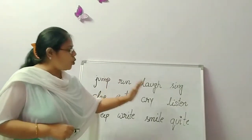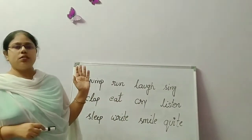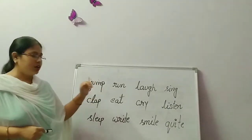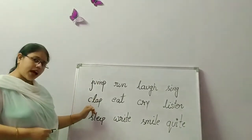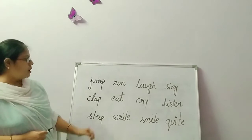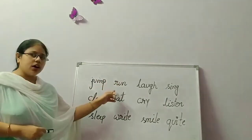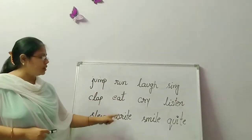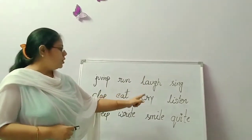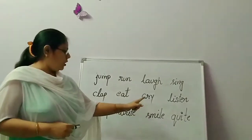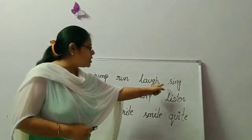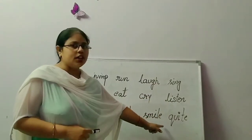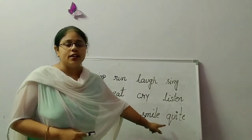We have done so many activities. What did we do? First we jumped. Then we clapped. Then we slept. Then we ran. Then we ate. Then we wrote. Then we laughed. Then we cried. Then we smiled. Then we sang. Then we listened. And then we were quiet.